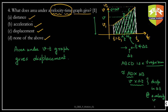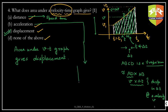Area under the velocity time graph gives displacement. If it is a speed time graph, it will give you distance. So the right answer is C in this case. Now, how do we get acceleration from a v-t graph? Acceleration is nothing but the slope of the line.